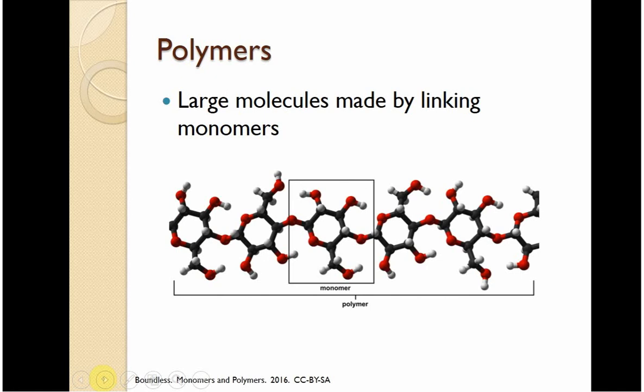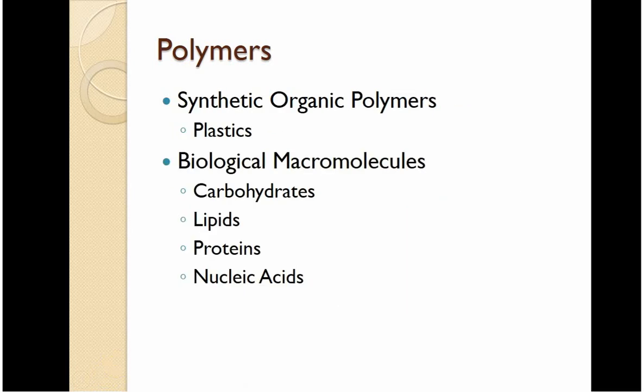Polymers are just long chains that are made by linking up monomers. So here's a monomer, but then there's another, and another, and they keep combining to get a large molecule. Now depending on which classification we're talking about, we can talk about plastics.